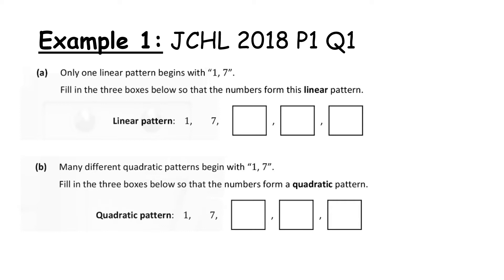Let's take a quick look at an example. Only one linear pattern begins with 1 and 7 — fill in the three boxes so that the numbers form a linear pattern. A linear or arithmetic pattern has a common first difference. We've added 6, so the term-to-term rule is to add 6 each time: 7 plus 6 is 13, 13 plus 6 is 19, 19 plus 6 is 25. That is the only linear pattern that exists because we have to keep adding that same 6.